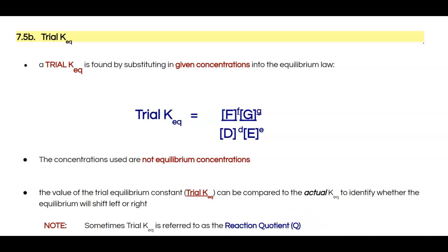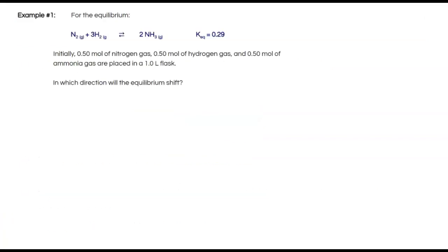Without further ado, let's explore a question that you might see as you work through equilibrium questions. We've got a typical question that involves trial K. For the equilibrium, I've got nitrogen and hydrogen combining to make ammonia — a familiar reaction in this section. They're giving us a K_EQ value of 0.29, which tells us that the reaction is favoring reactants, but only slightly.